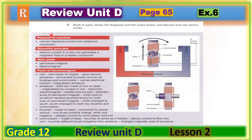In Exercise 6, you have to read about how this device works. You need to cover the purpose of the machine — to convert electrical current into rotational movement — and the scientific principle that electric current in a wire coil generates a magnetic field in a nearby conductor. Then write about the main parts: permanent magnet and electromagnet, and describe what each part does.